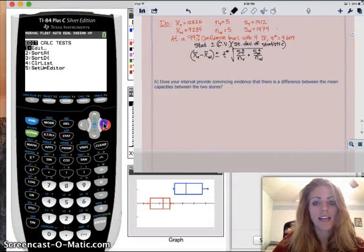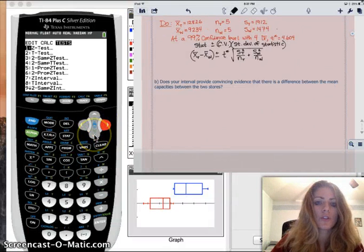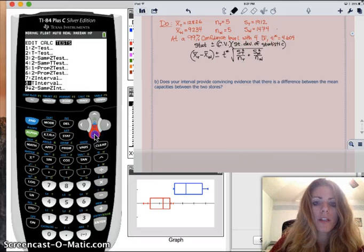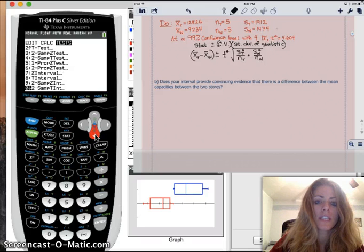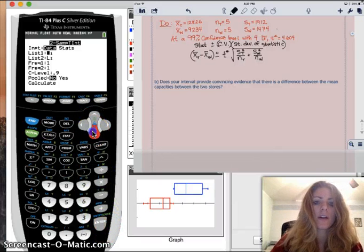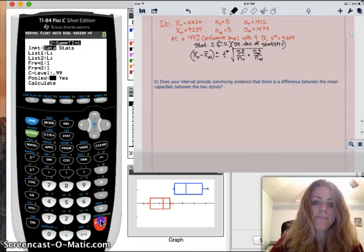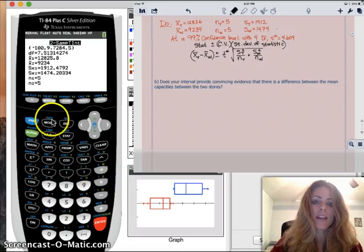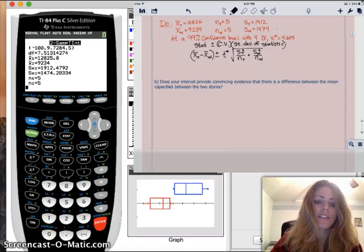Since we've already written down what all of these variables are numerically, then we can just have the calculator do the rest for us. So, you want to go to stat tests. Two sample, not a test, that's a hypothesis test, but we want a two sample t interval, not proportions. And we have data, so we're going to click that. We've got L1 and L2, and our confidence level is 0.99. Calculate. No, we're not pooling. Calculate. And voila, there is our confidence interval.